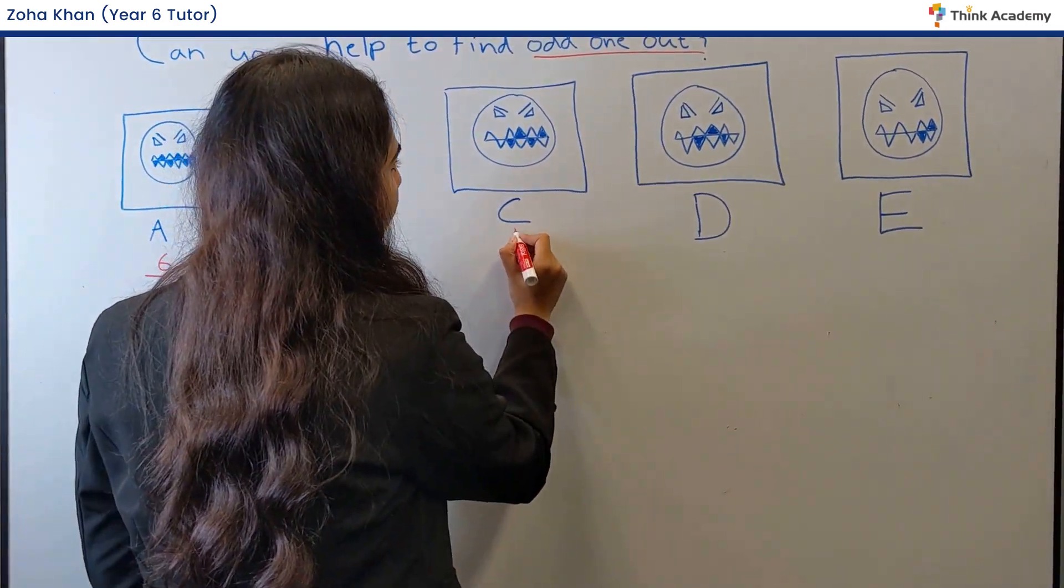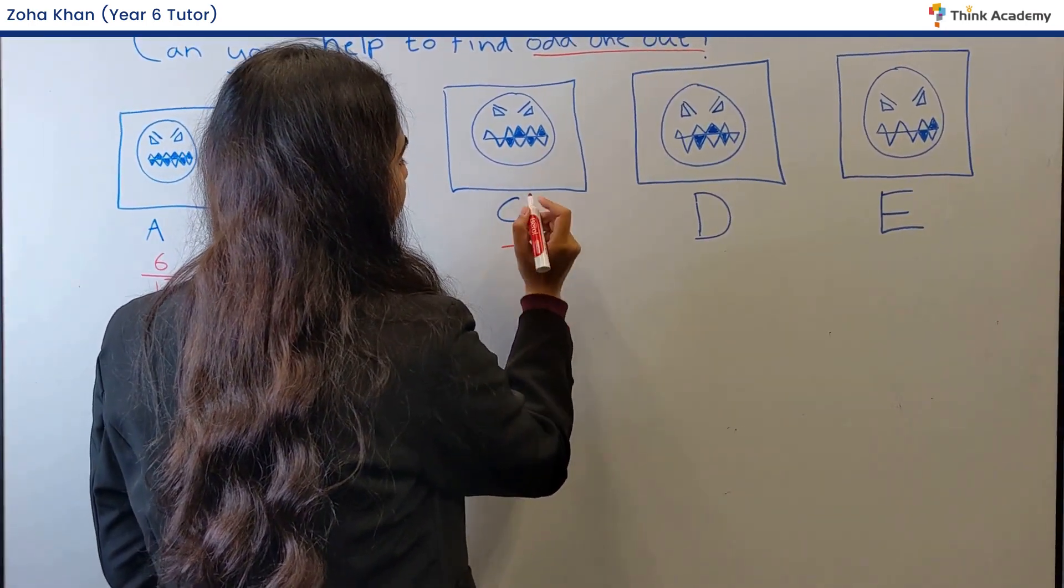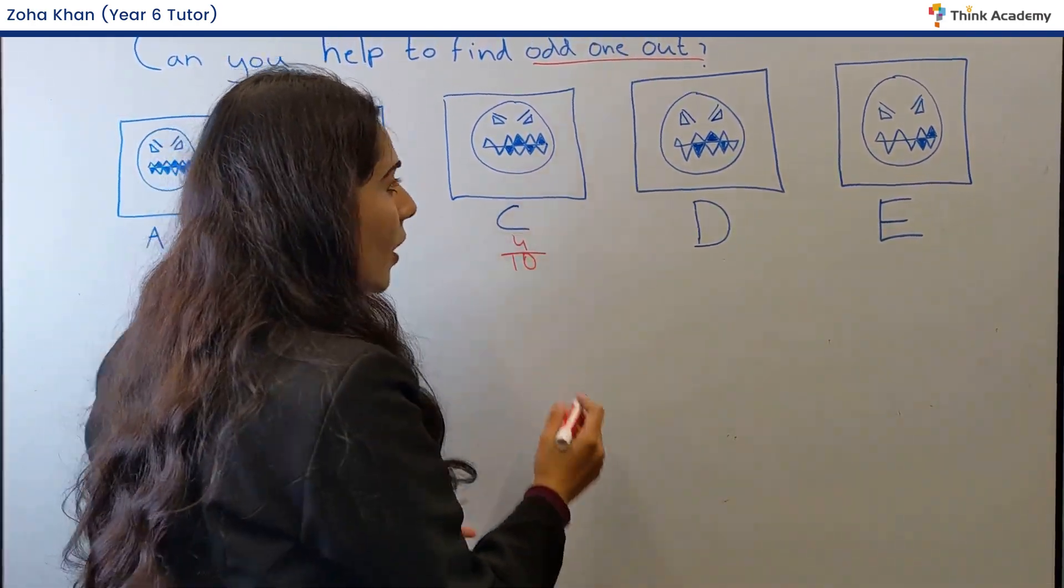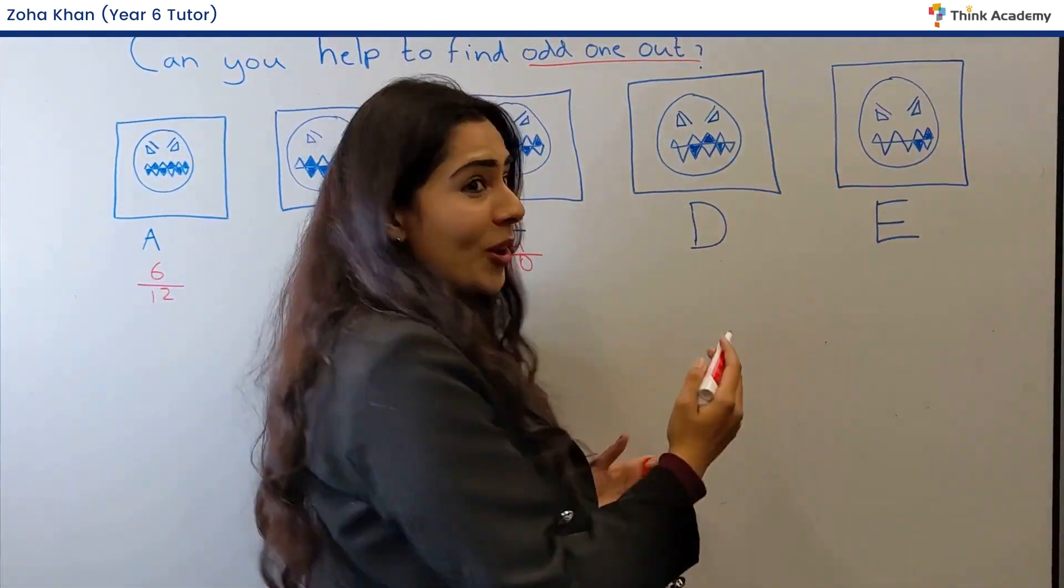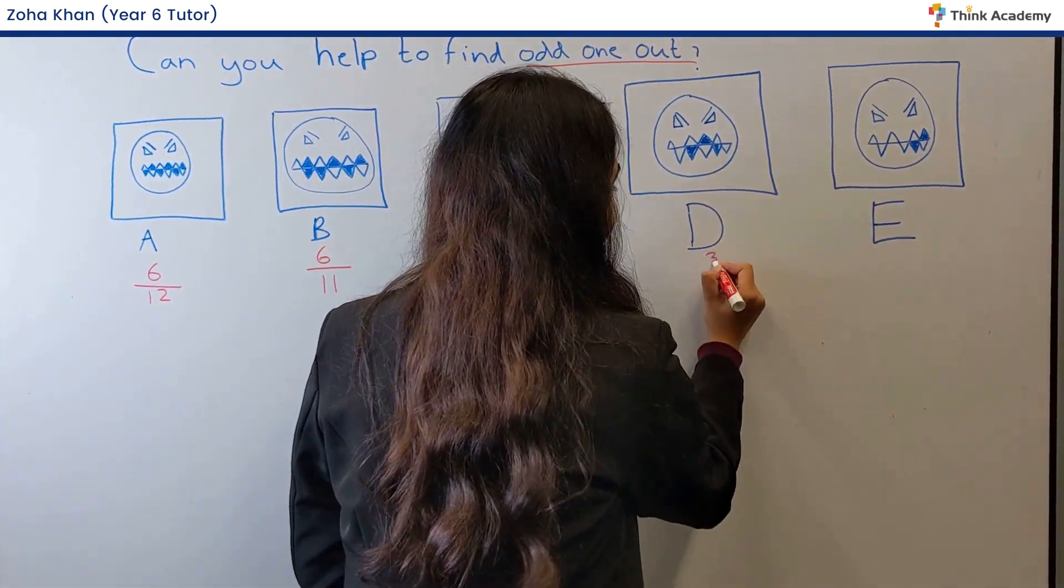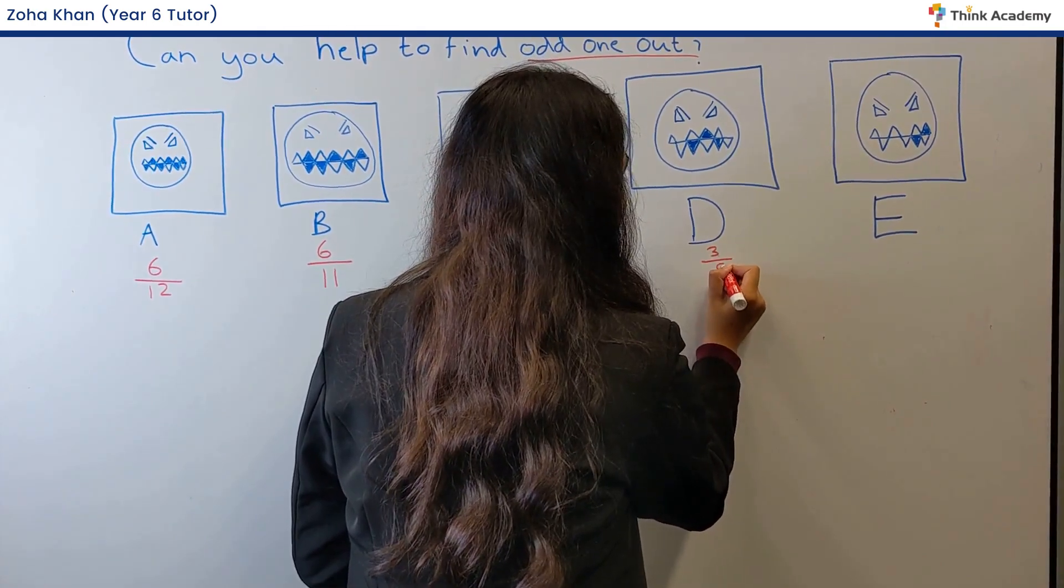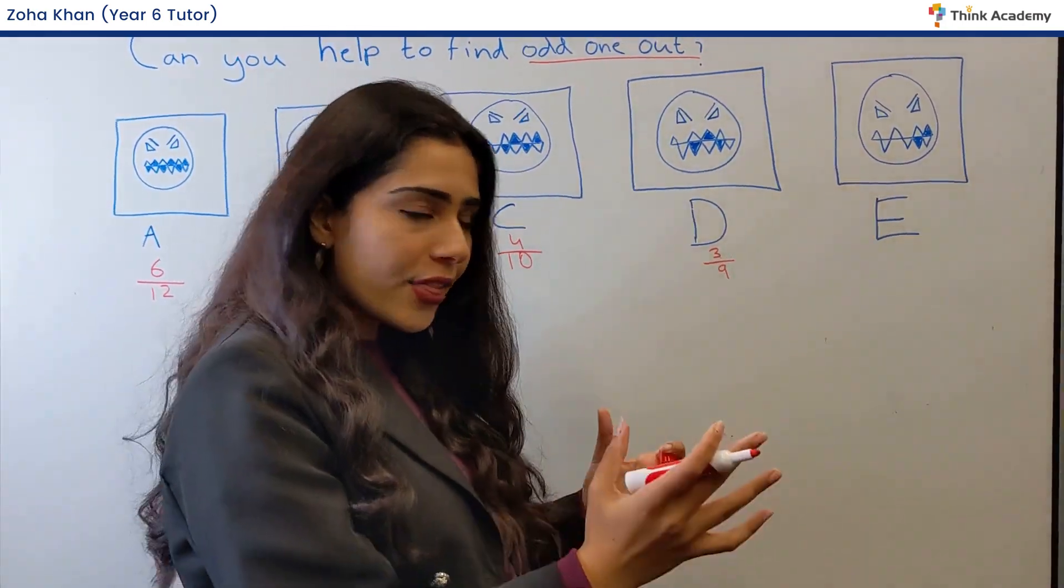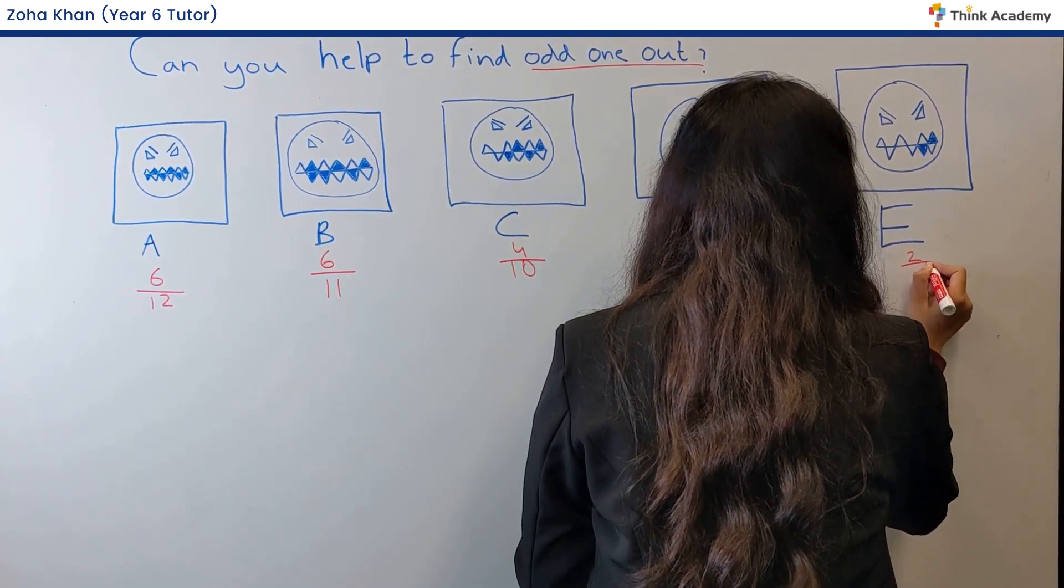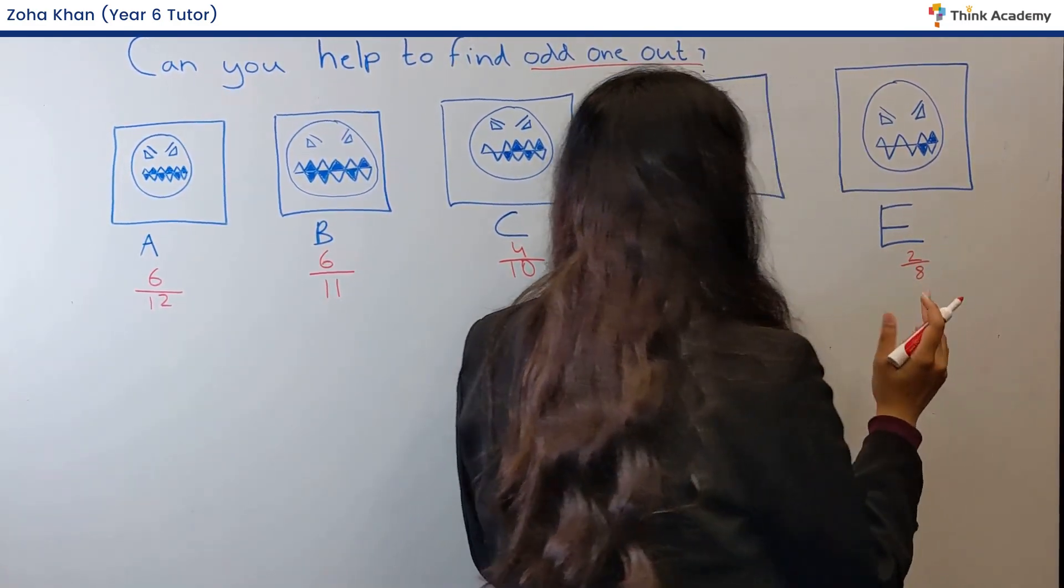For C, we've got four shaded parts and we've got 10 triangles all together. For D, as you can see, let's count the triangles. We've got three shaded triangles over nine triangles all together. And over here, we've got two shaded triangles over eight triangles all together.